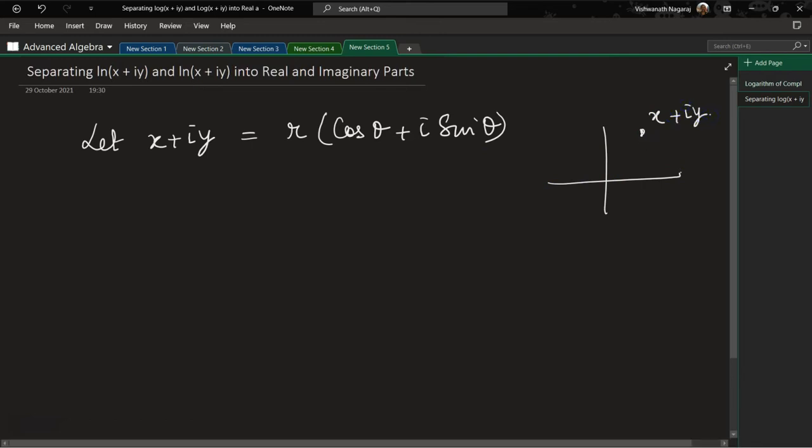This would be the real numbers and this is the imaginary numbers, so this would be x, this would be y, this would be the r, and this would be the θ.